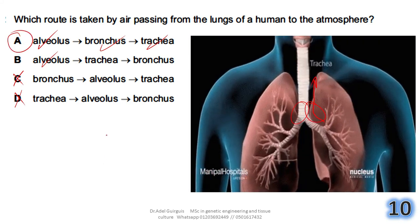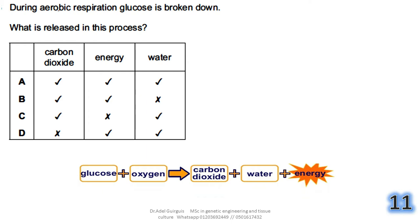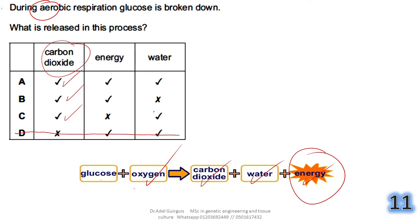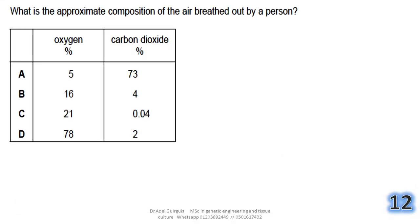Question 11: during aerobic respiration glucose is broken down — what is released? In aerobic respiration, oxygen must be present. Glucose is broken down in the presence of oxygen to produce carbon dioxide, water, and energy. Carbon dioxide is released, energy is released, and water is released. The answer is A.